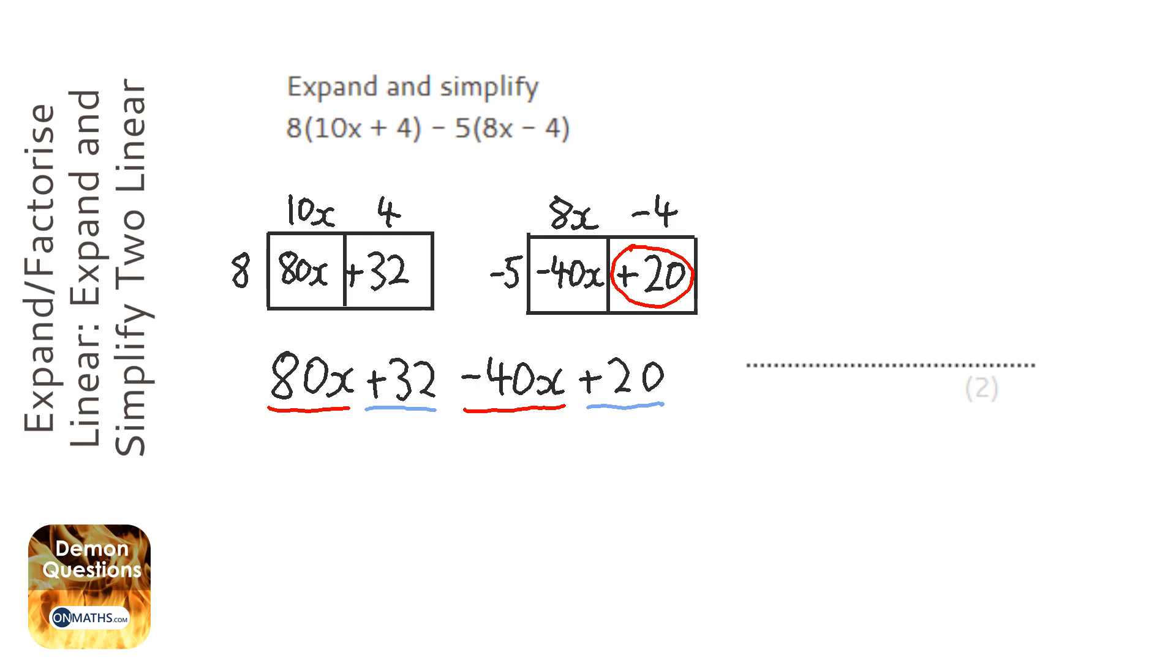So it's 80x minus 40x, so it's going to be 40x. And it's going to be 32 plus 20, which is going to be 52. So my answer is going to be 40x plus 52.